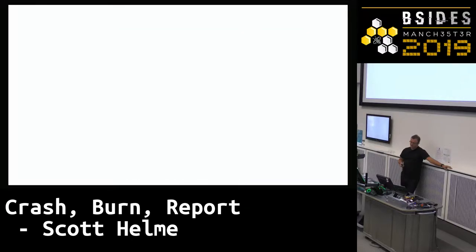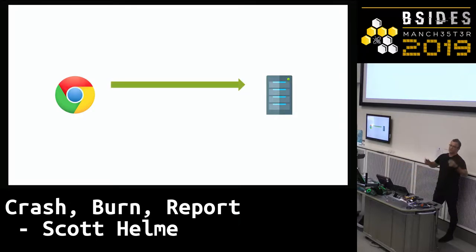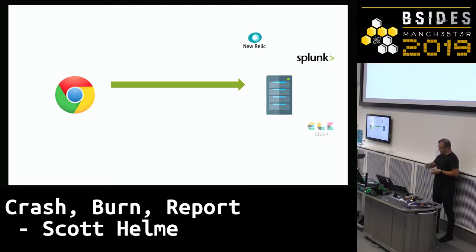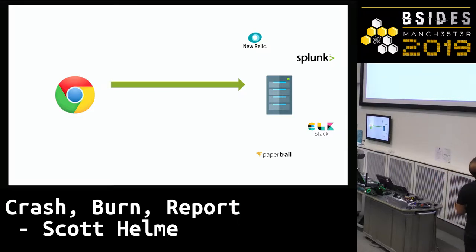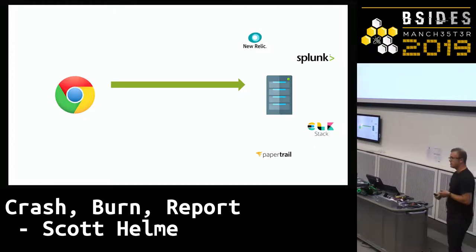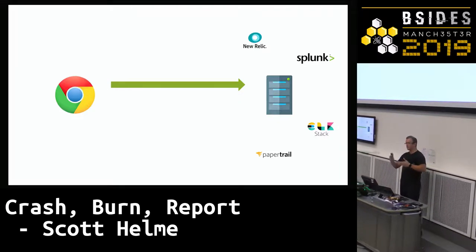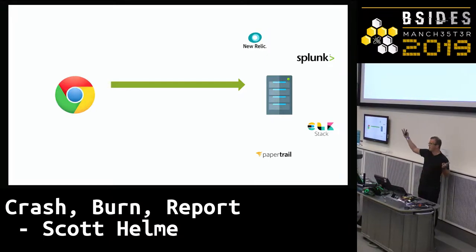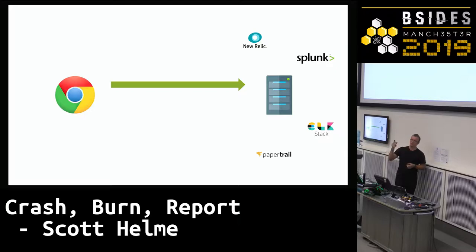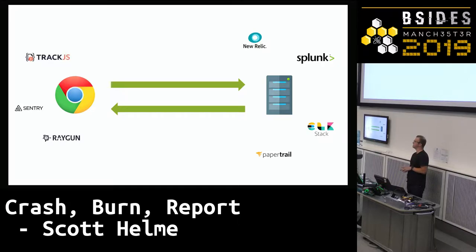We have a fairly typical browsing scenario: people come to our website, send a request, we generate the page and response. On the server side, we already have tools like New Relic and PaperTrail to monitor things. There's a lot of interest in this area — about half the room uses some monitoring tool. We want to track performance, log errors, see when things go wrong. And on the client side too, tools like TrackJS and Sentry exist, though they require deploying a library.